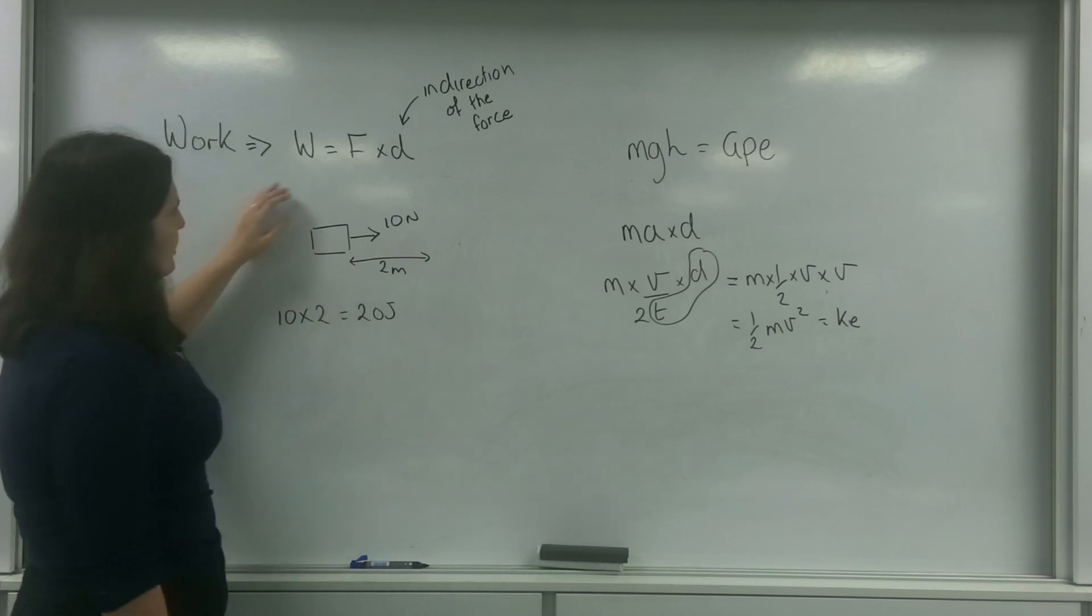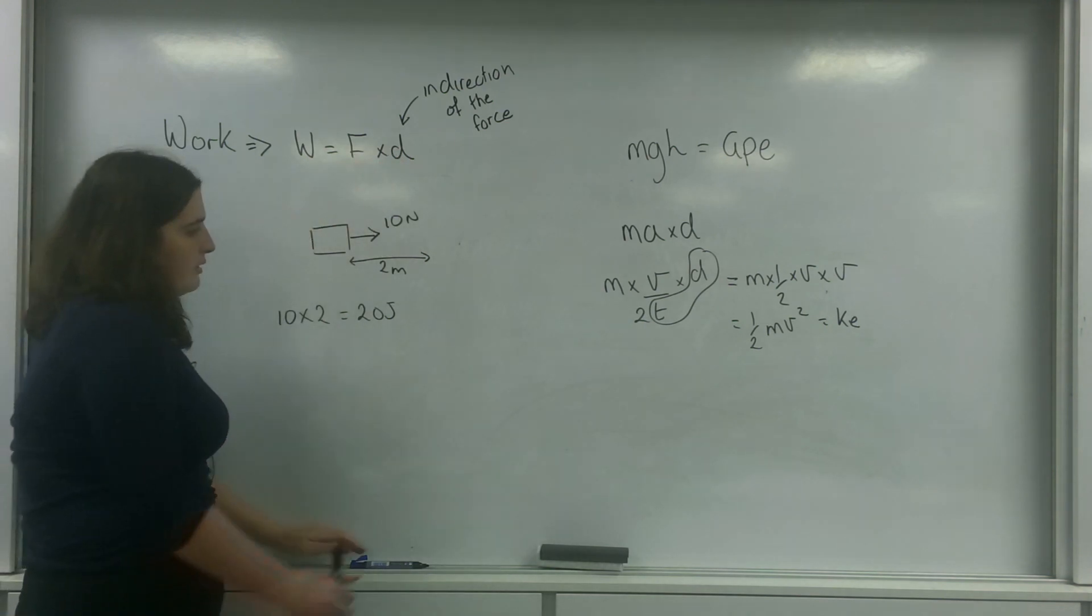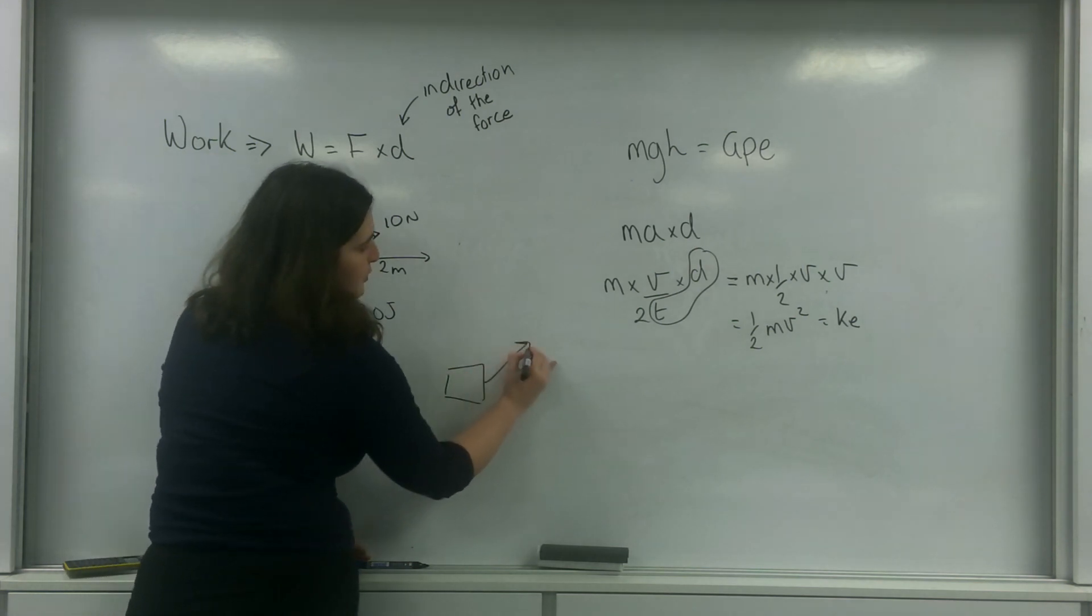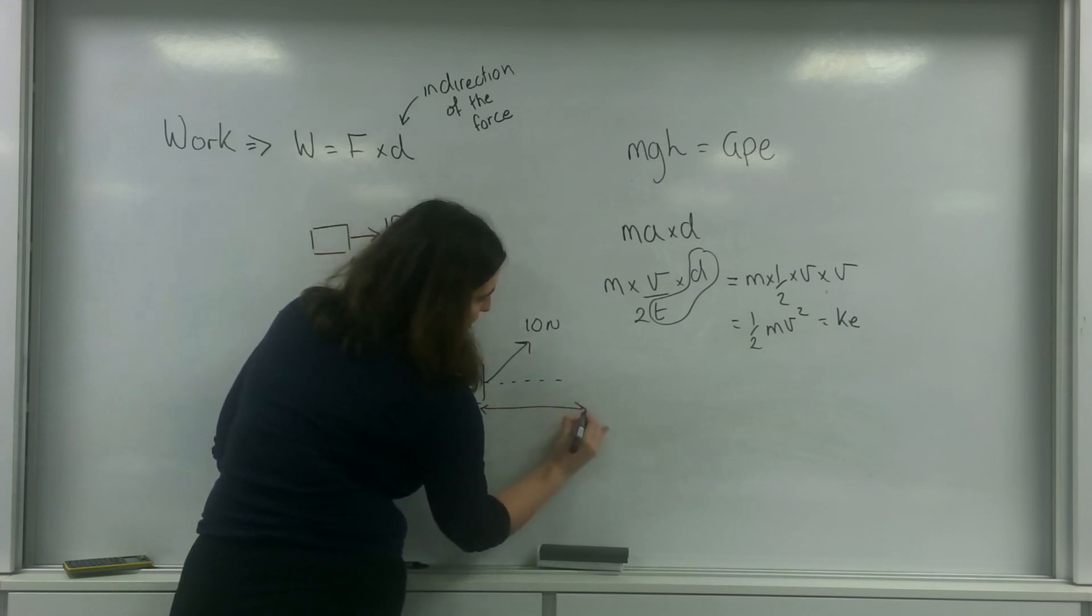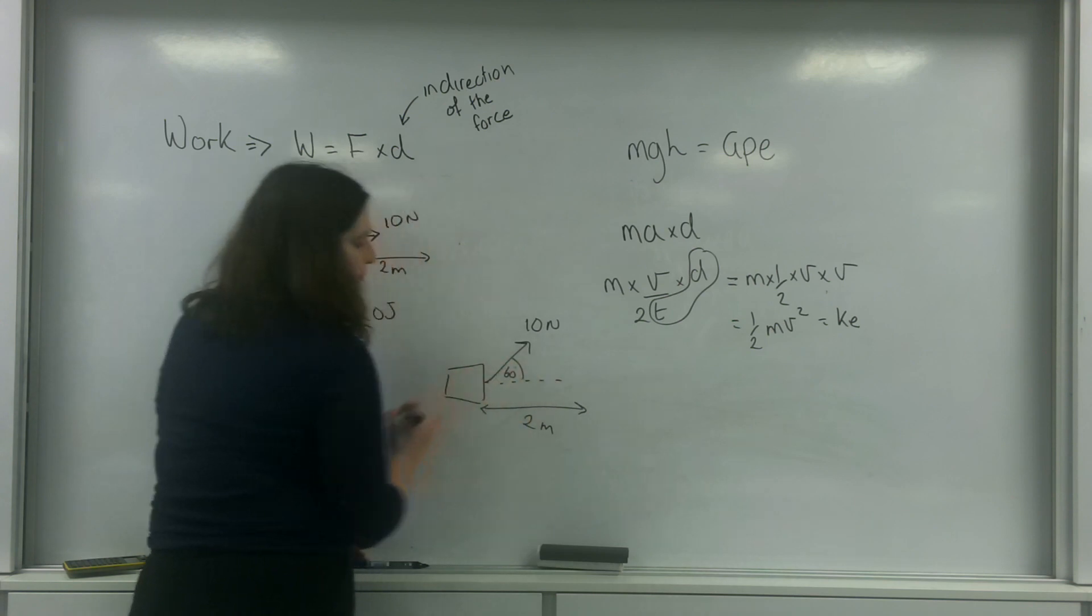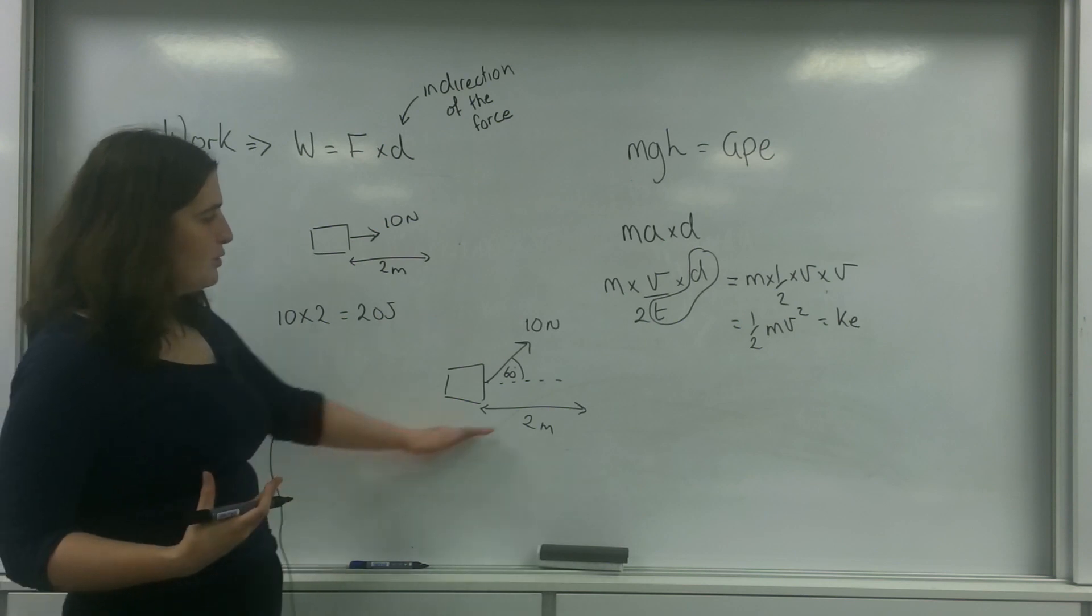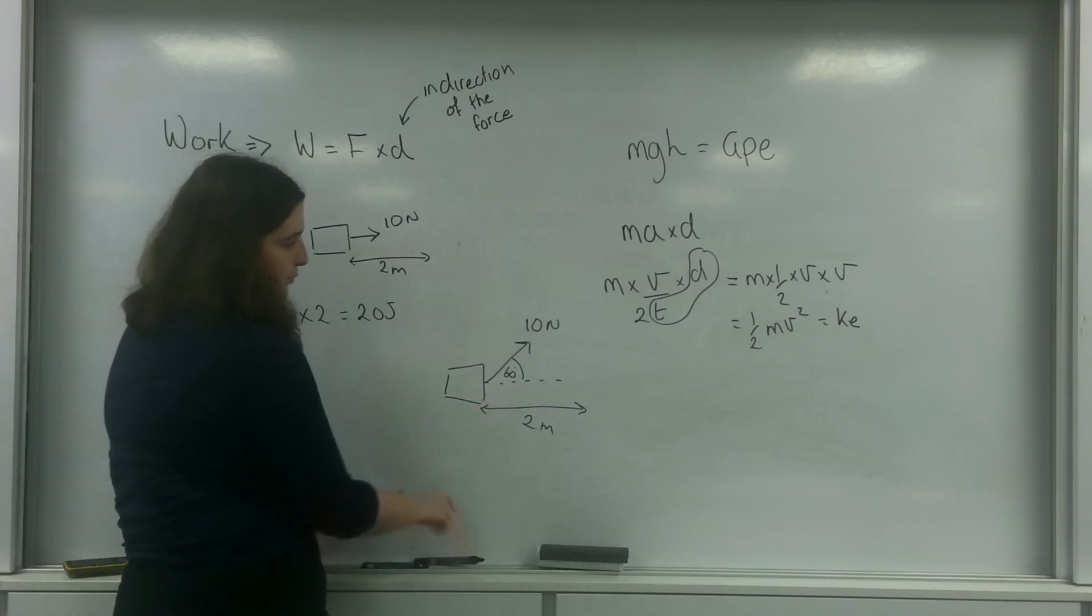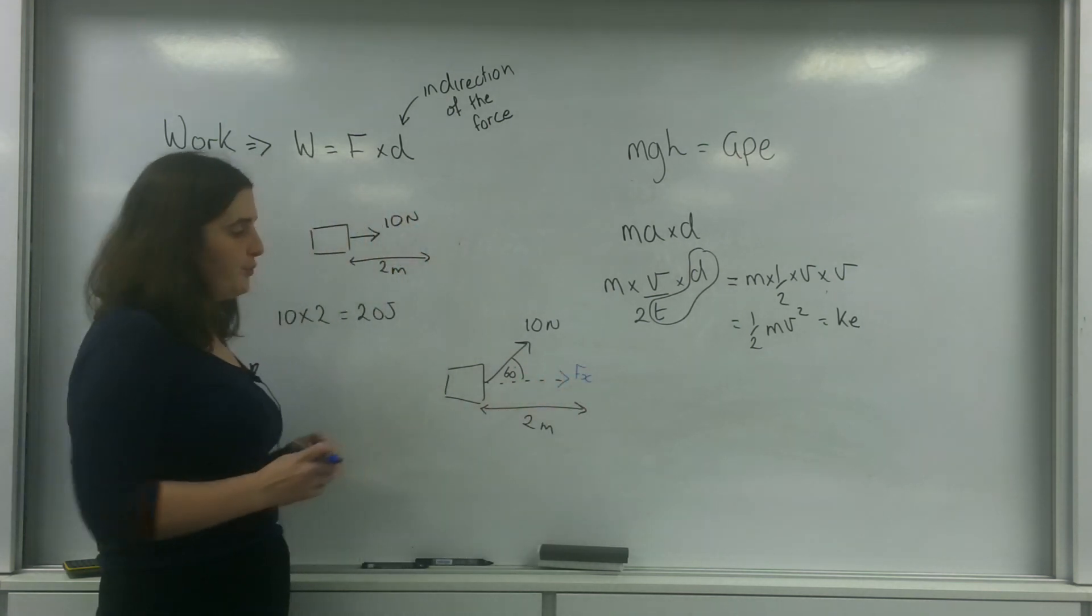Now, it's really important this is in the direction of the force. So if your object here has a force of 10 newtons this way, and you want to know how much energy to move at 10 meters, and this is 60 degrees, you need to work out how much energy you need to move at this 2 meters. So you need to find the component here, in the direction of the force.